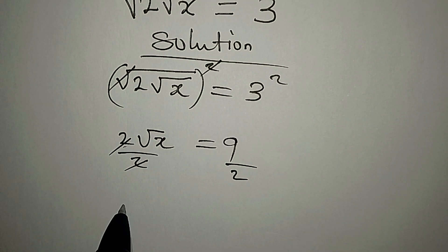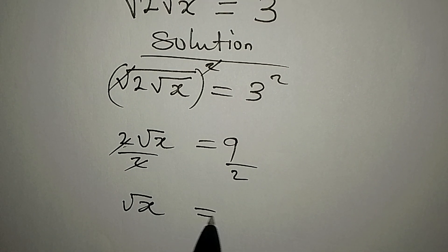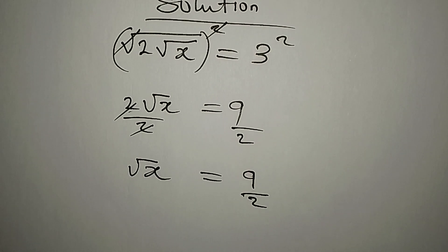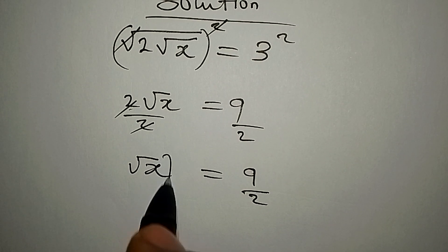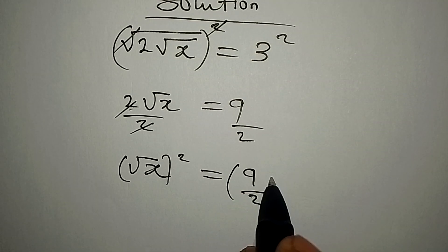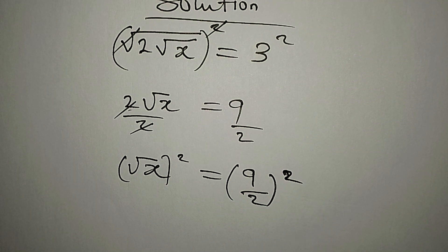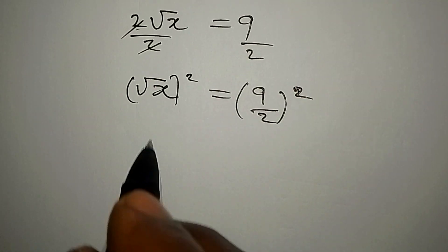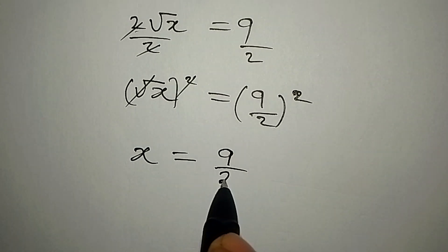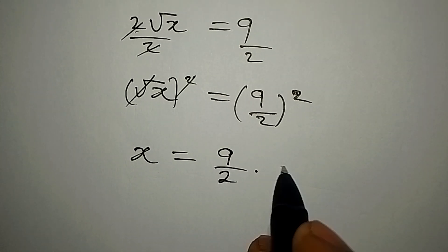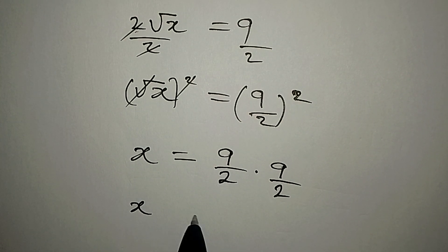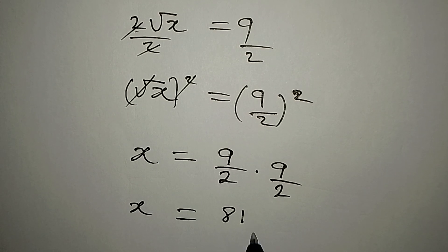The next step is to divide by 2. This will go, and square root of x is equal to 9 over 2. Now square this again so that the square root can go, and x will be equal to 9 over 2 multiplied by 9 over 2. Our x is equal to 81 over 4.